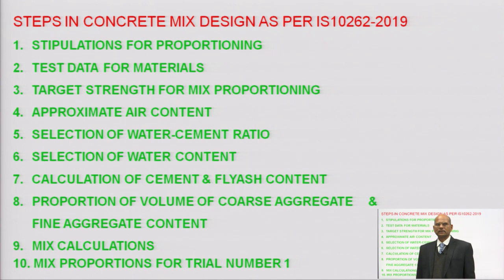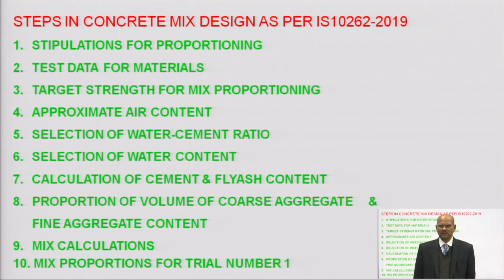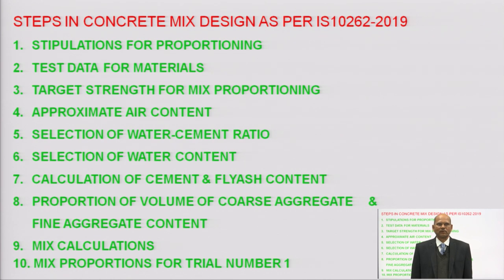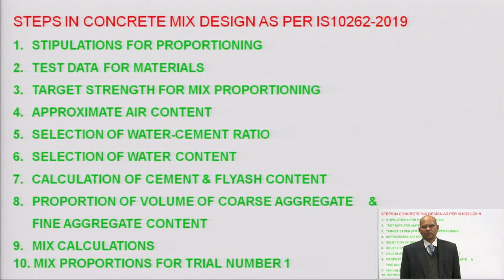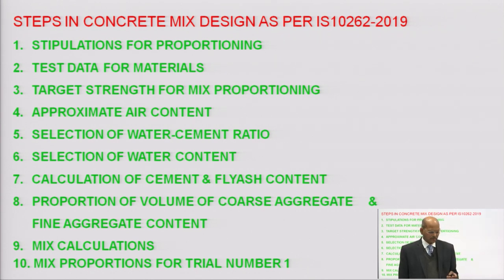Here concretely we have the following steps. First will be stipulations of the proportioning — data will be given, what data is required from the field: grade of concrete, field condition, exposure condition, types of admixtures, type of cement. We have to collect the material from the site in the laboratory, then perform different types of tests, calculate the mean target strength, approximate air content, selection of water-cement ratio, selection of water content, calculation of cement and fly ash content, proportion of volume of coarse aggregate and fine aggregate, mix calculations and mix proportioning for trial number 1.